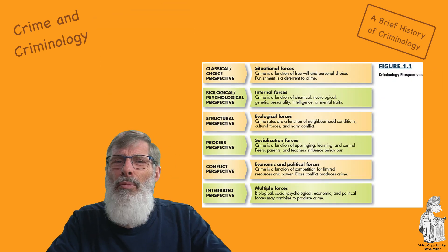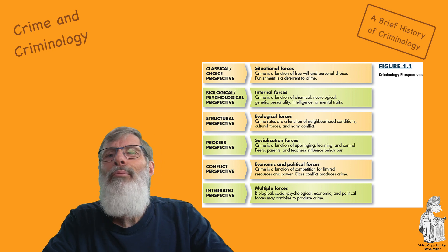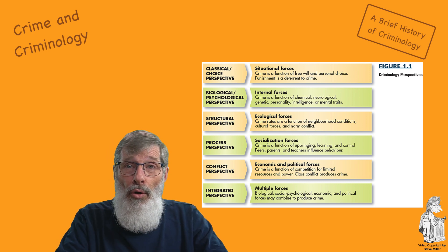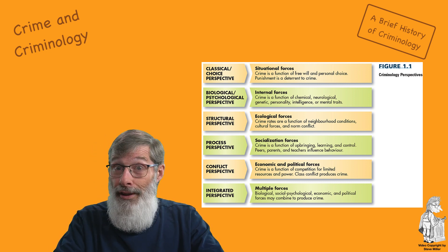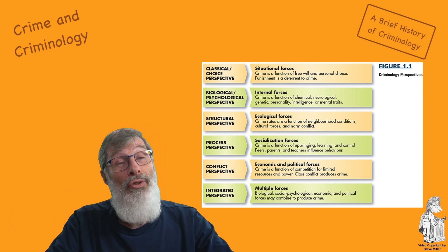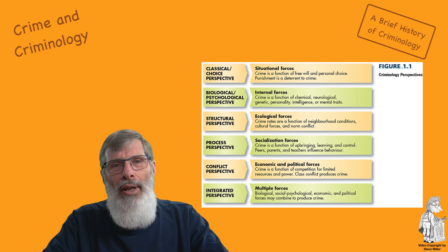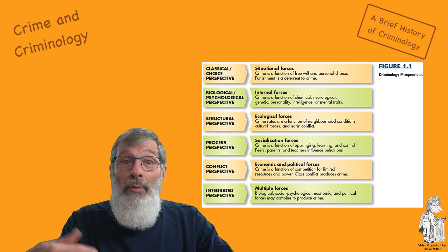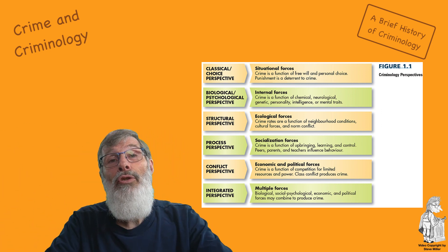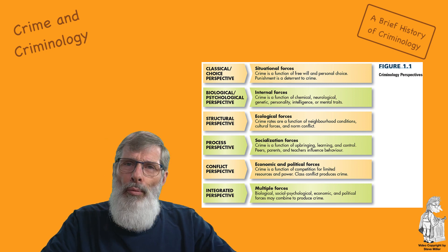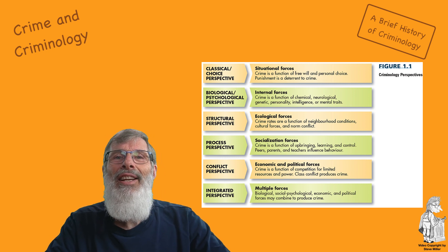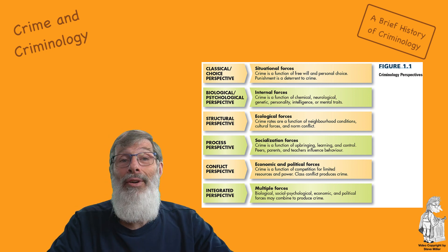More contemporary criminology describes perspectives as evolutions of previously held viewpoints on criminal behavior. Classical theory evolved into what is now known as rational choice theory, which argues that criminals make rational decisions when they commit crimes. Lombroso's theory evolved into contemporary biosocial and psychological perspectives. The original Chicago School vision has been updated into social structure theory, which maintains that a disadvantaged economic class position is the primary cause of crime.